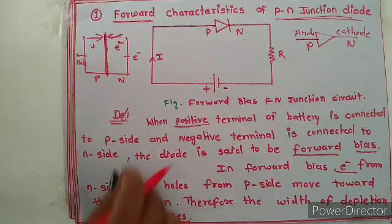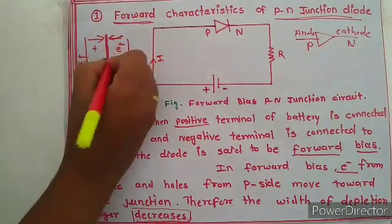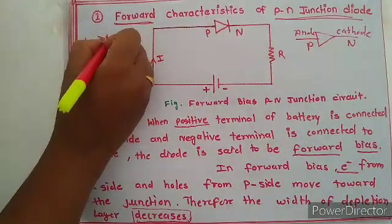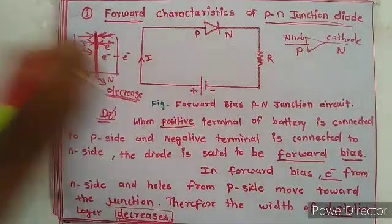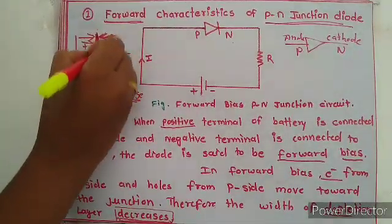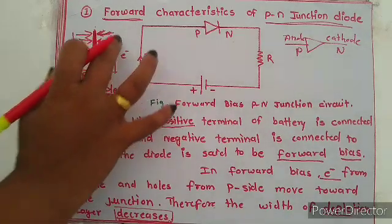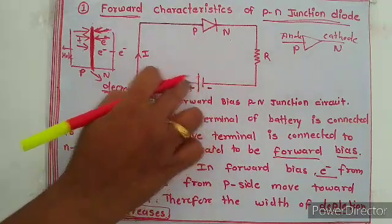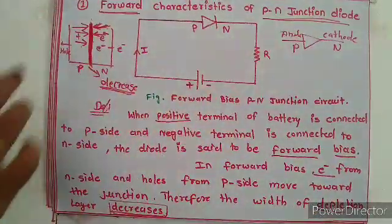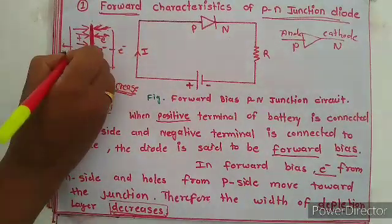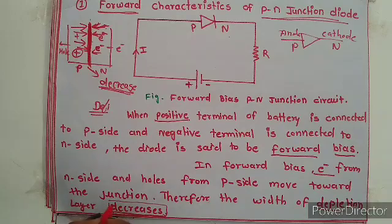You have to keep this in mind — it comes in exams. What is meant by forward bias? And in forward bias, what happens to the depletion layer? It decreases. Because the electrons from the N-type side come towards the depletion layer, and the holes from the P side also come towards this barrier. That is why the width of the depletion layer decreases. In forward bias, the positive terminal of the battery is connected to the P side and the negative terminal to the N side — the diode is said to be forward biased.